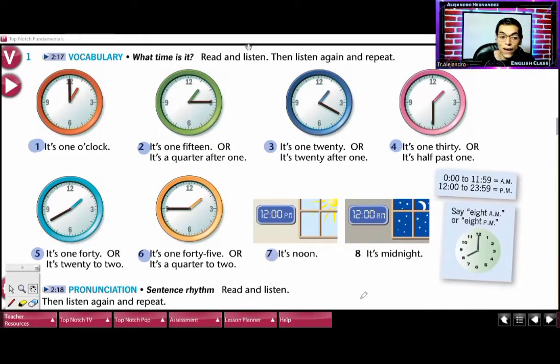Number seven: it's noon. We're going to use noon for midday, when it's twelve during the day. Noon means midday. Then we have number eight, that is midnight. Midnight means medianoche. Are we talking about midday or midnight? Noon or midnight, correct? Any questions?